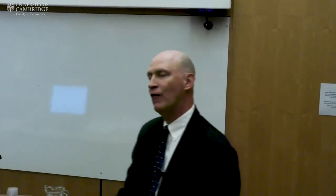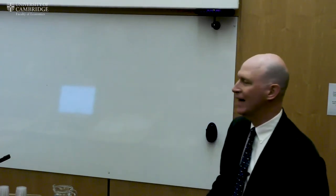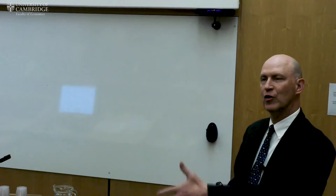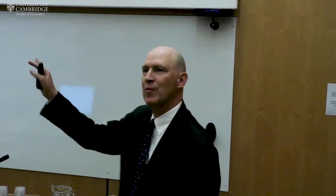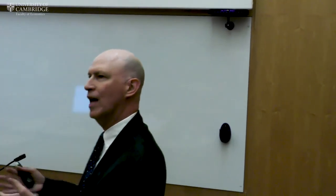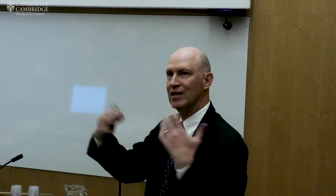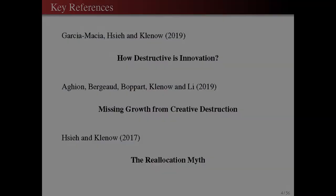Here is my outline. First, I want to motivate why firms and growth, since there are other important topics in growth. Then I want to describe estimates where I break down contributions to growth from different types of firm-level innovation: creative destruction versus brand-new varieties versus incumbents introducing improvements in their own products. A related topic is which firms — how important are entrants, and among incumbents, how important are the fast-growing ones versus the slower ones. Finally, I'll discuss to what extent these sources of growth are easy to measure and likely to be captured in the data.